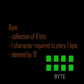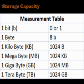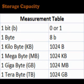A byte is a collection of 8 bits. Here is the measurement table: one byte equals 8 bits. One kilobyte — short form KB — equals 1024 bytes. One megabyte — short form MB — equals 1024 kilobytes. One gigabyte — short form GB — equals 1024 megabytes. One terabyte — short form TB — equals 1024 gigabytes. This is the measurement table of bits and bytes.